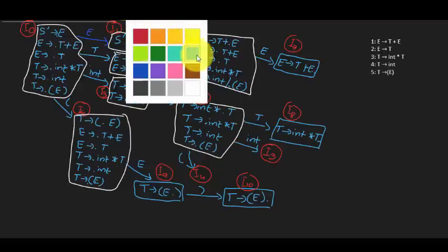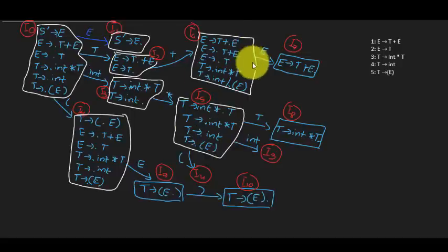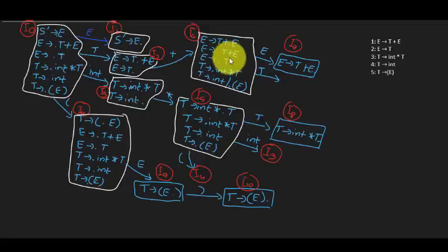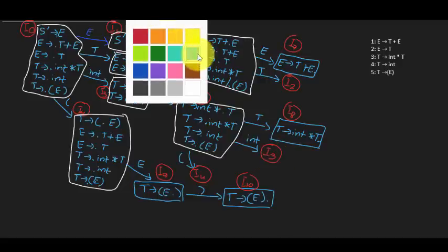We're done with input int, input T, and input open parenthesis for various states. When we move the dot after T in another state, it points to I2. Input int points to I3. For open parenthesis, it loops back to the same big state I4 — a self-loop. We're now done computing all states.